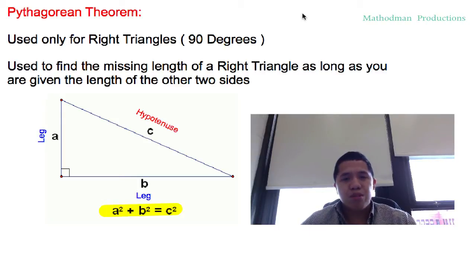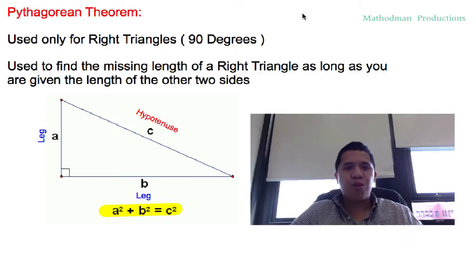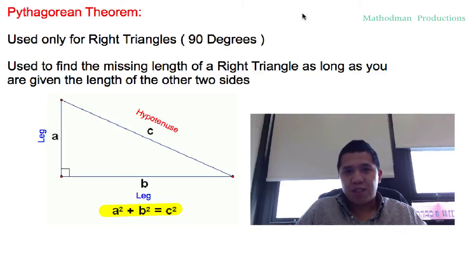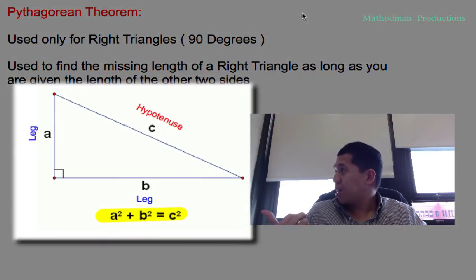And it's used to find the missing length of a right triangle as long as you are given the length of the other two sides. A little review, if you look to my right, if you look at the right triangle to my right,